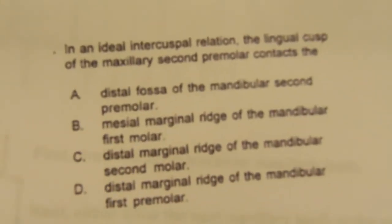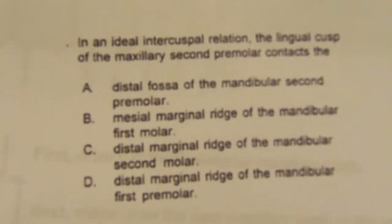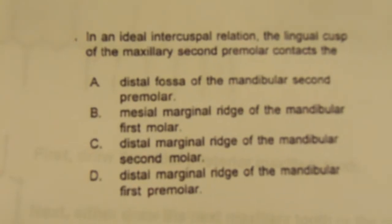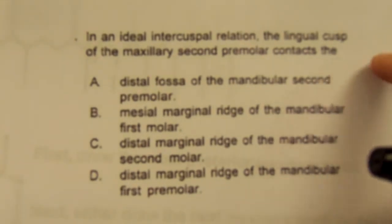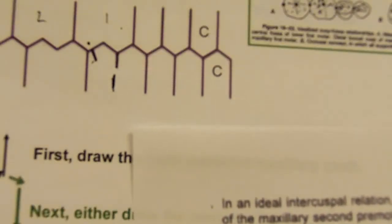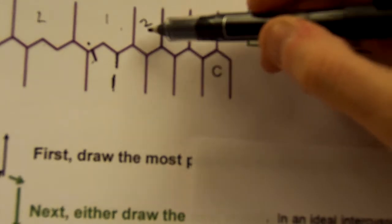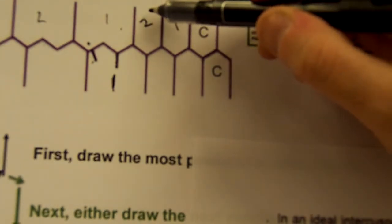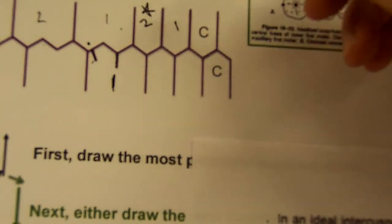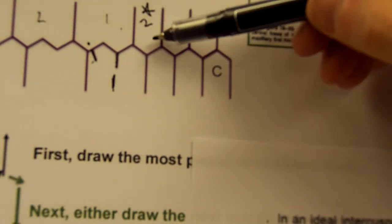In an ideal intercuspal relation, the lingual cusp of the maxillary second premolar contacts which feature? Maxillary second premolar — I'm right here. The lingual cusp — that means we're looking at a centric cusp.